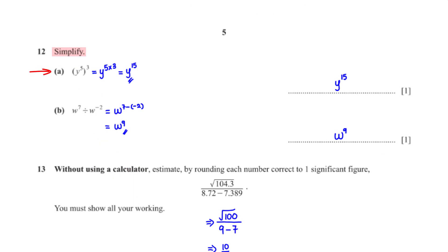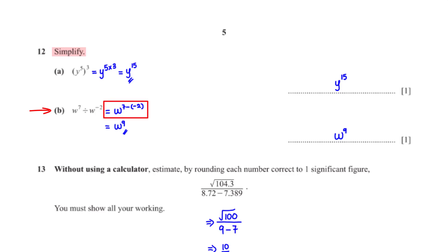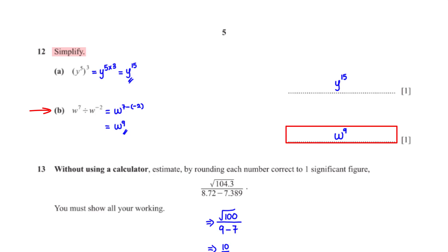Simplify y raised to the power 5, all cubed. The powers of y multiply, so we have y raised to the power 5 times 3. 5 times 3 is 15, so we have y raised to the power 15. Simplify w raised to the power 7 divided by w raised to the power negative 2. Since the terms have the same base and they are dividing, their powers subtract. So we have w raised to the power 7 minus negative 2. 7 minus negative 2 is 9, so we have w raised to the power 9.